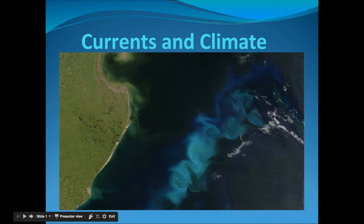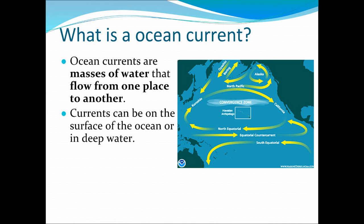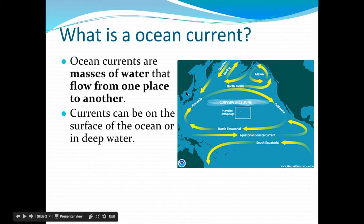Now that you've written down what you already know, what you already bring to the table, let's begin our discussion with: what is an ocean current? An ocean current is masses of water that flow from one place to another. These can be from one place on the map to another — like the Kuroshio current, which flows up the coast of Japan towards the coast of California. Or these currents can flow from the surface of the water down to the depths.